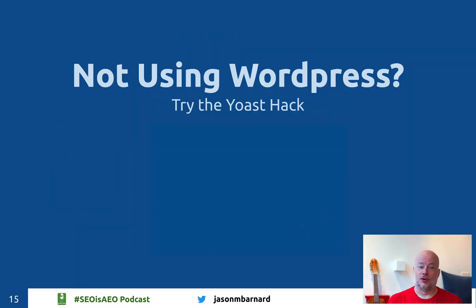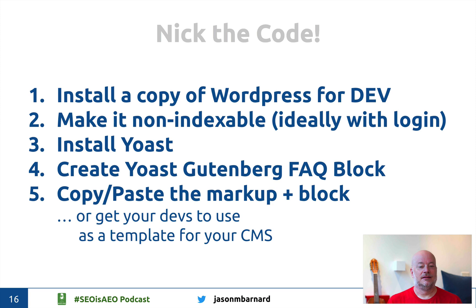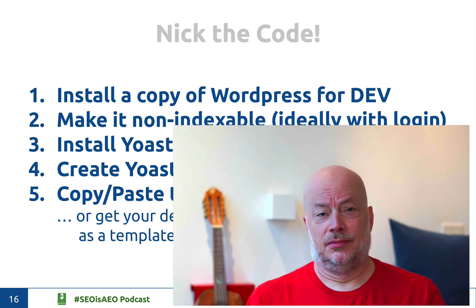And if you're not using WordPress, use the Yoast hack. Setting up a WordPress site for development, installing Yoast, doing your schema markup in Yoast, and then copy-pasting it into your site — or getting your developers to use it as a template — is a perfect way to write great schema markup incredibly easily.